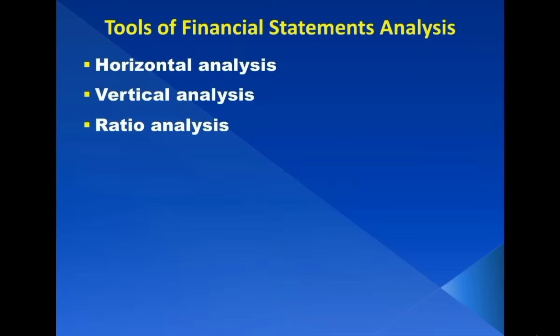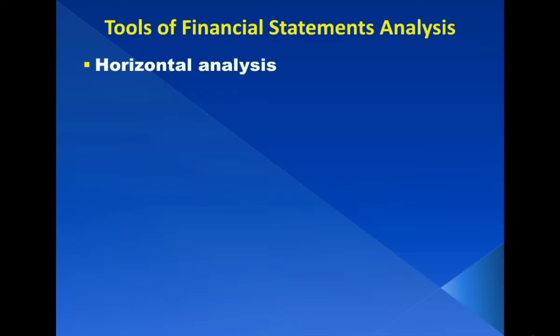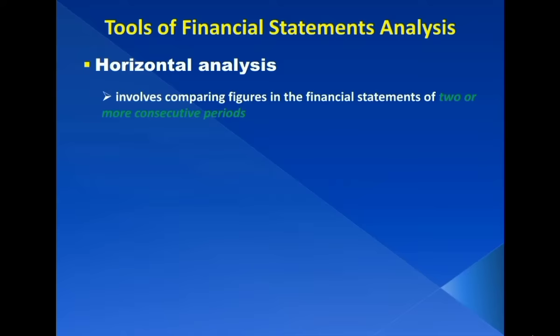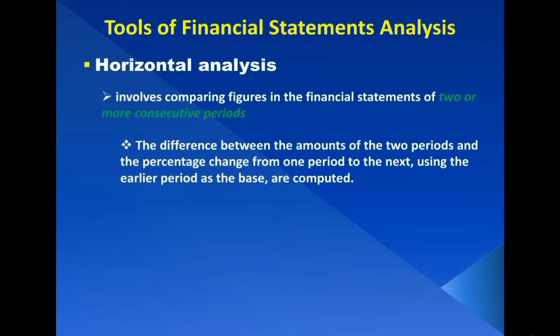Horizontal analysis evaluates a series of financial data over time. In other words, it involves comparing figures in the financial statements of two or more consecutive periods. The difference between the amounts of two periods and the percentage change from one period to the next, using the earlier period as the base, are computed. Horizontal analysis is often described as trend ratios and percentages.